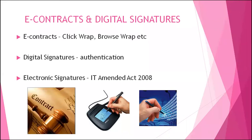Today we are all making use of various e-contracts, with or without our knowledge. A classic example is when you sign up for Gmail — there are terms and conditions you must accept. These are e-contracts. The same happens when you purchase products on e-commerce platforms like Amazon, Flipkart, or Snapdeal — by agreeing to their terms and conditions, you are entering into an e-contract.